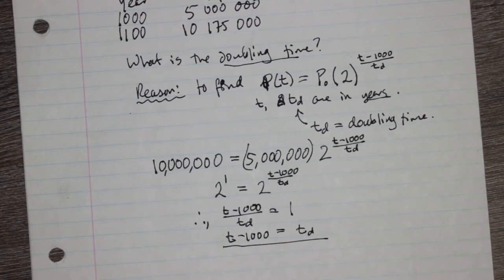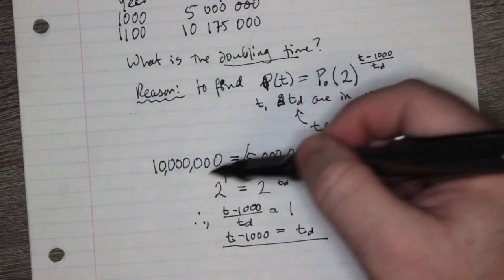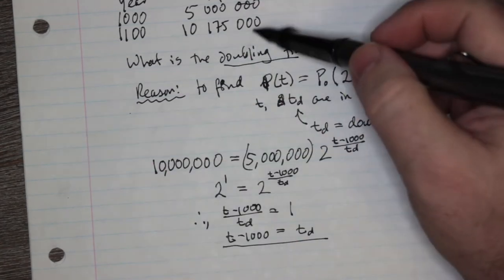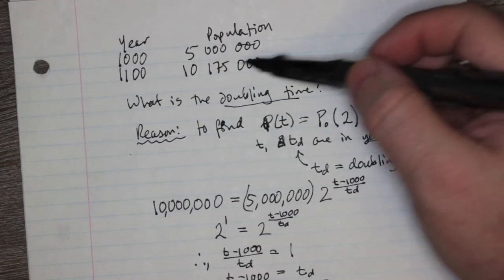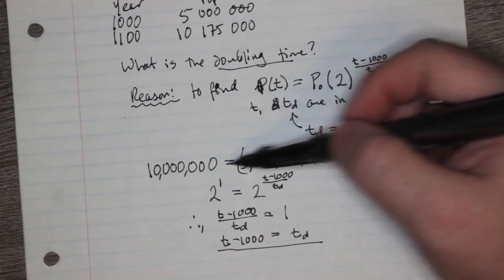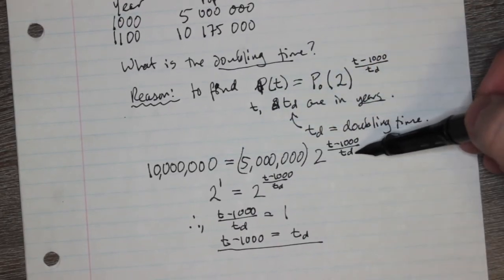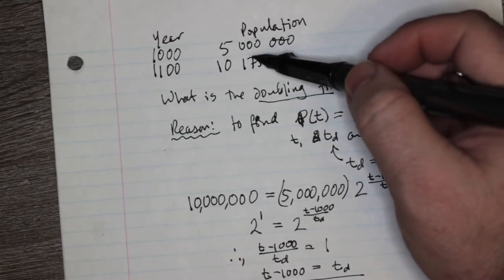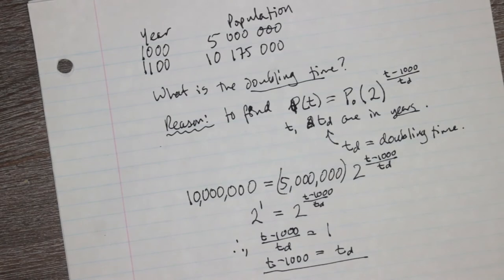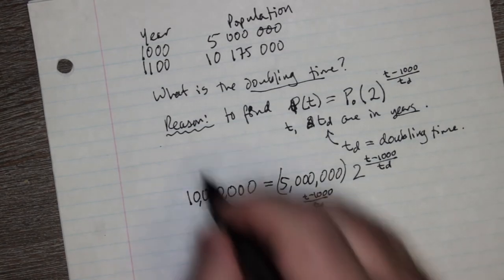So we found a kind of a nice way of figuring out the doubling time. The only thing is we need real data for this, because this 10 million is hypothetical. In order to get to as far as 10,175,000, we had to pass 10 million, but we just don't know when it passed. But to figure out td, we can actually use an actual year, and we got one right here. So let's look at the year 1,100.